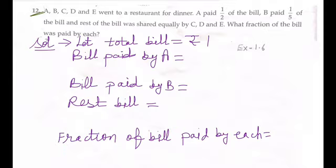So we are assuming that the bill is rupees 1, you can take x also, your wish. So they are saying half of the bill is paid by A, so 1/2 of the total bill, so it will be 1/2. This much bill is paid by A. Then one-fifth of the bill is paid by B.